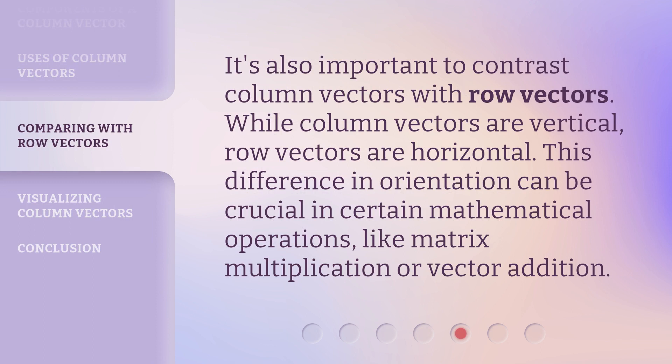It's also important to contrast column vectors with row vectors. While column vectors are vertical, row vectors are horizontal. This difference in orientation can be crucial in certain mathematical operations, like matrix multiplication or vector addition.